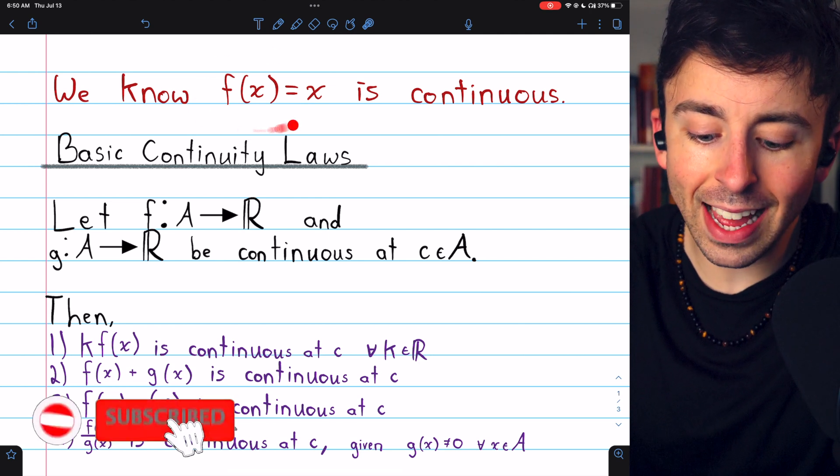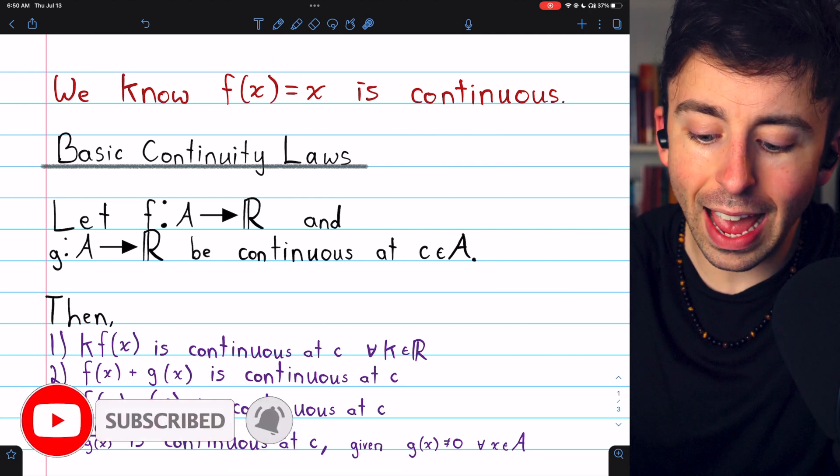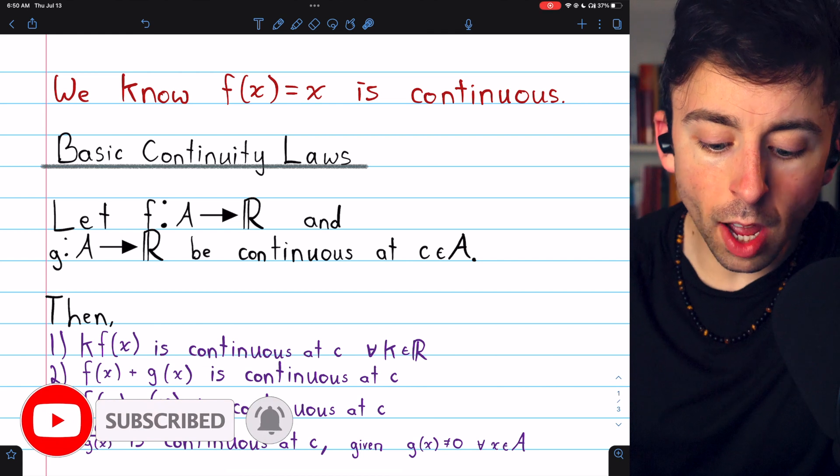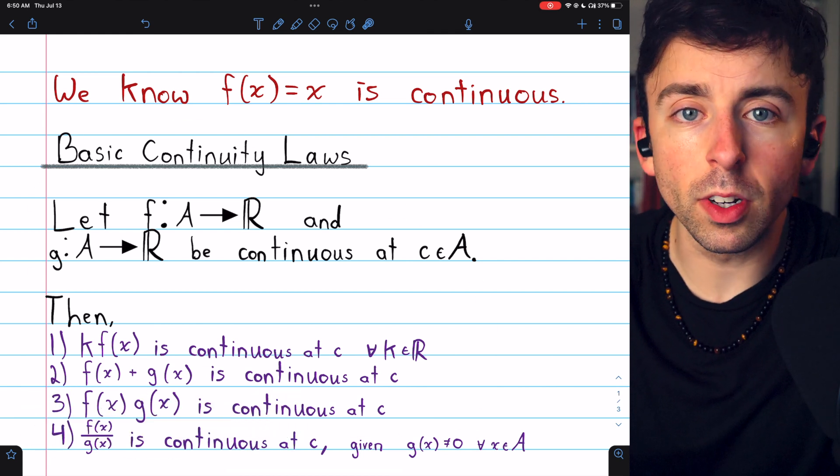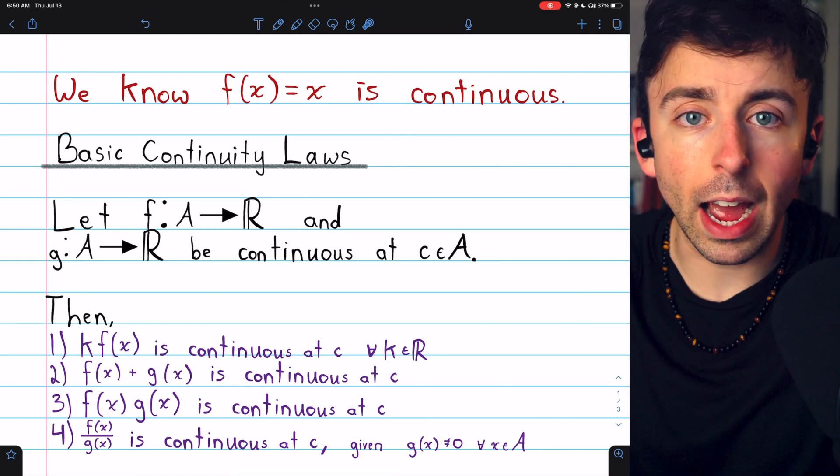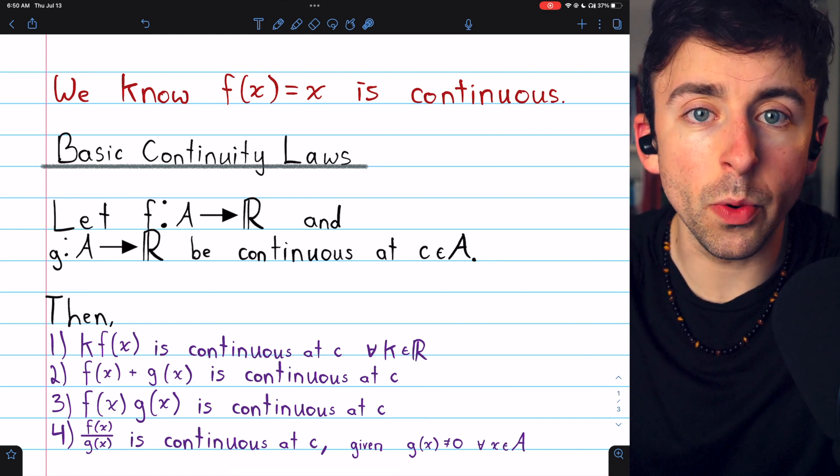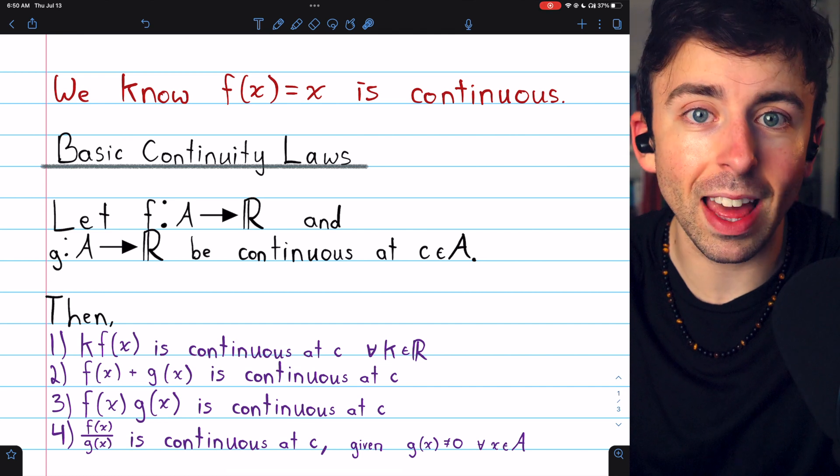We previously proved that the identity function f of x equals x is continuous, and we also proved these basic continuity laws. Links in the description to those lessons. I mentioned how every polynomial is continuous, and with these results we can establish that.